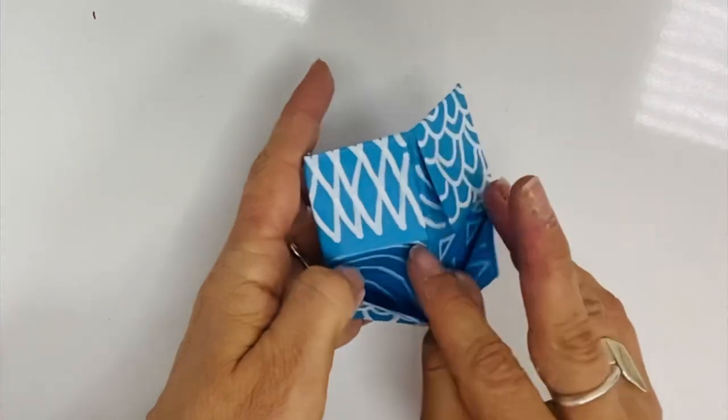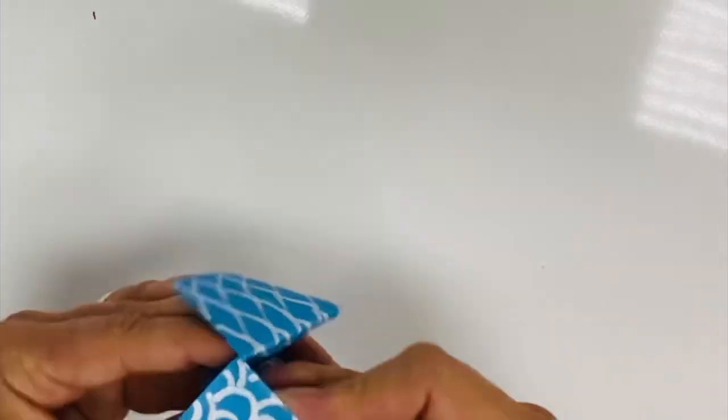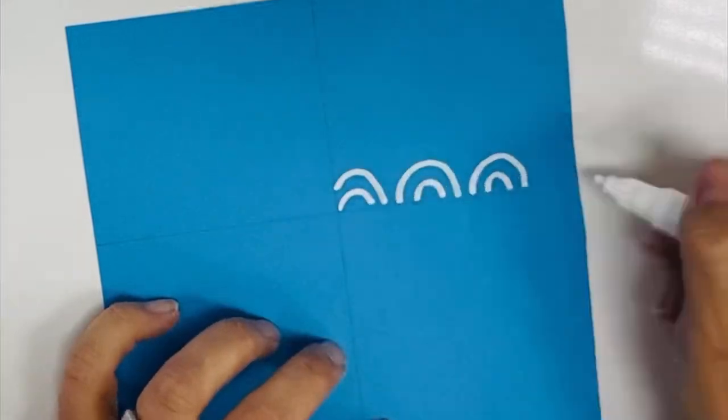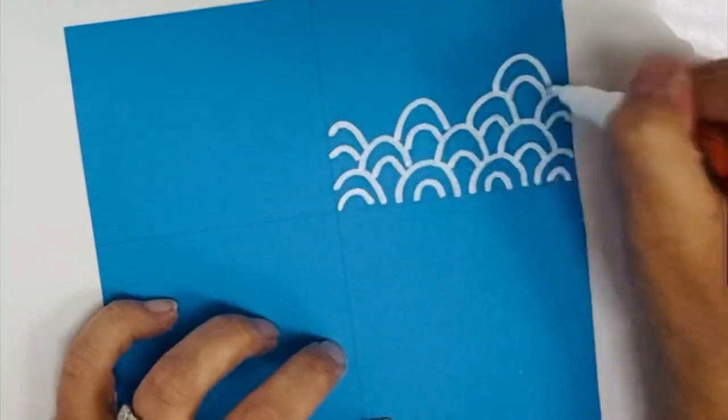This is where the magic happens and the folding begins. You definitely need a square. You'll fold in twice. I will explain this a bit later.